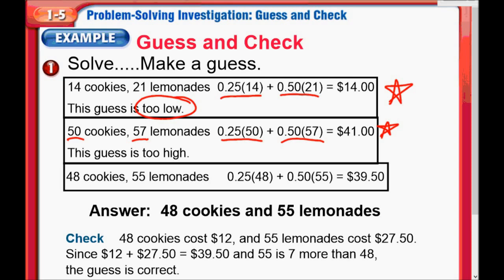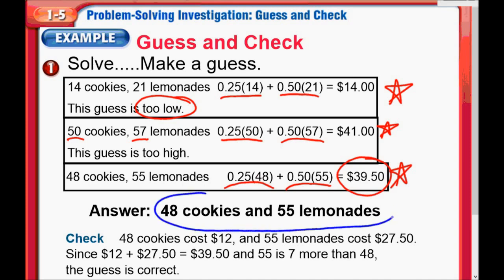Here I picked the correct answer — that's 48 cookies. If I sold 48 cookies, I need to sell seven more lemonades, and 48 plus seven is 55. So 25 cents times the 48 cookies, 50 cents times the 55 lemonades — and we nailed the answer of $39.50. So our answer would be 48 cookies and 55 lemonades.